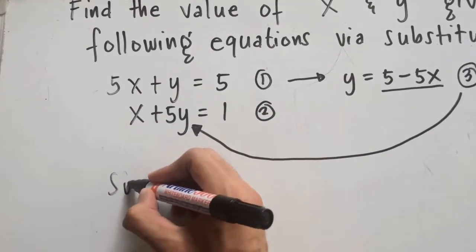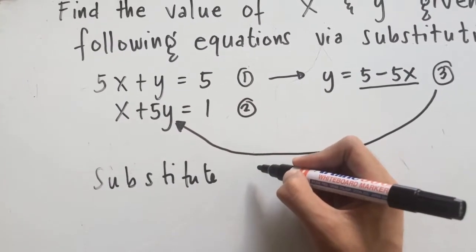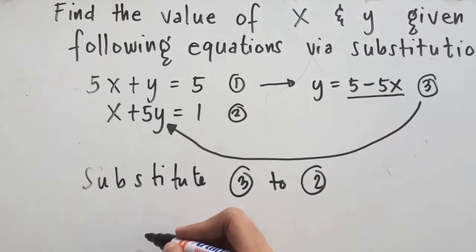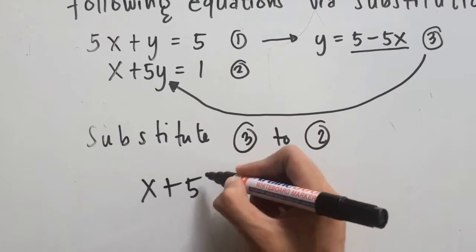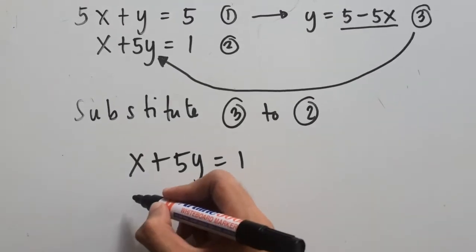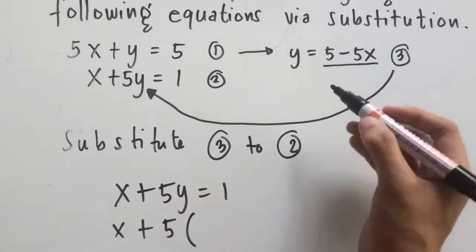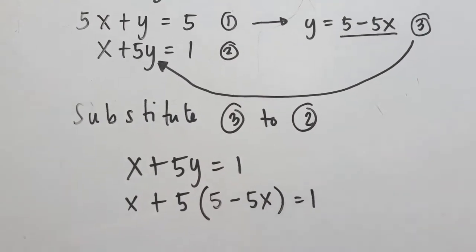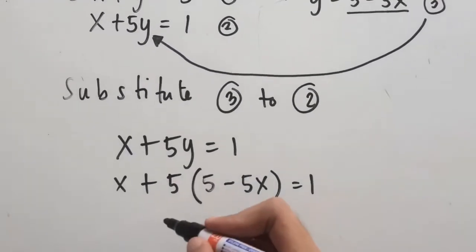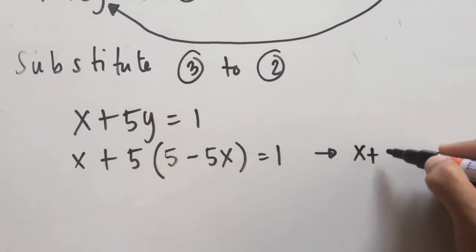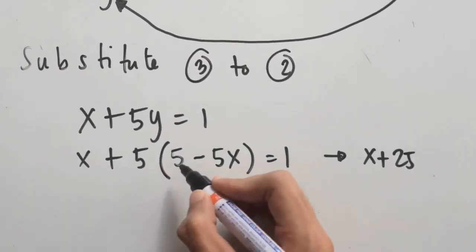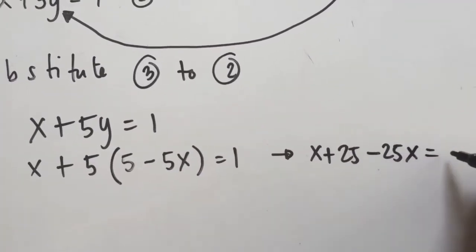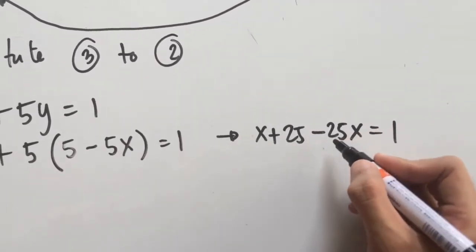Let's substitute equation 3 into equation 2. So x plus 5y is equal to 1 — that's our second equation. Now substituting: x plus 5 times (5 minus 5x) is equal to 1. Simplifying: x plus 25 minus 25x is equal to 1.